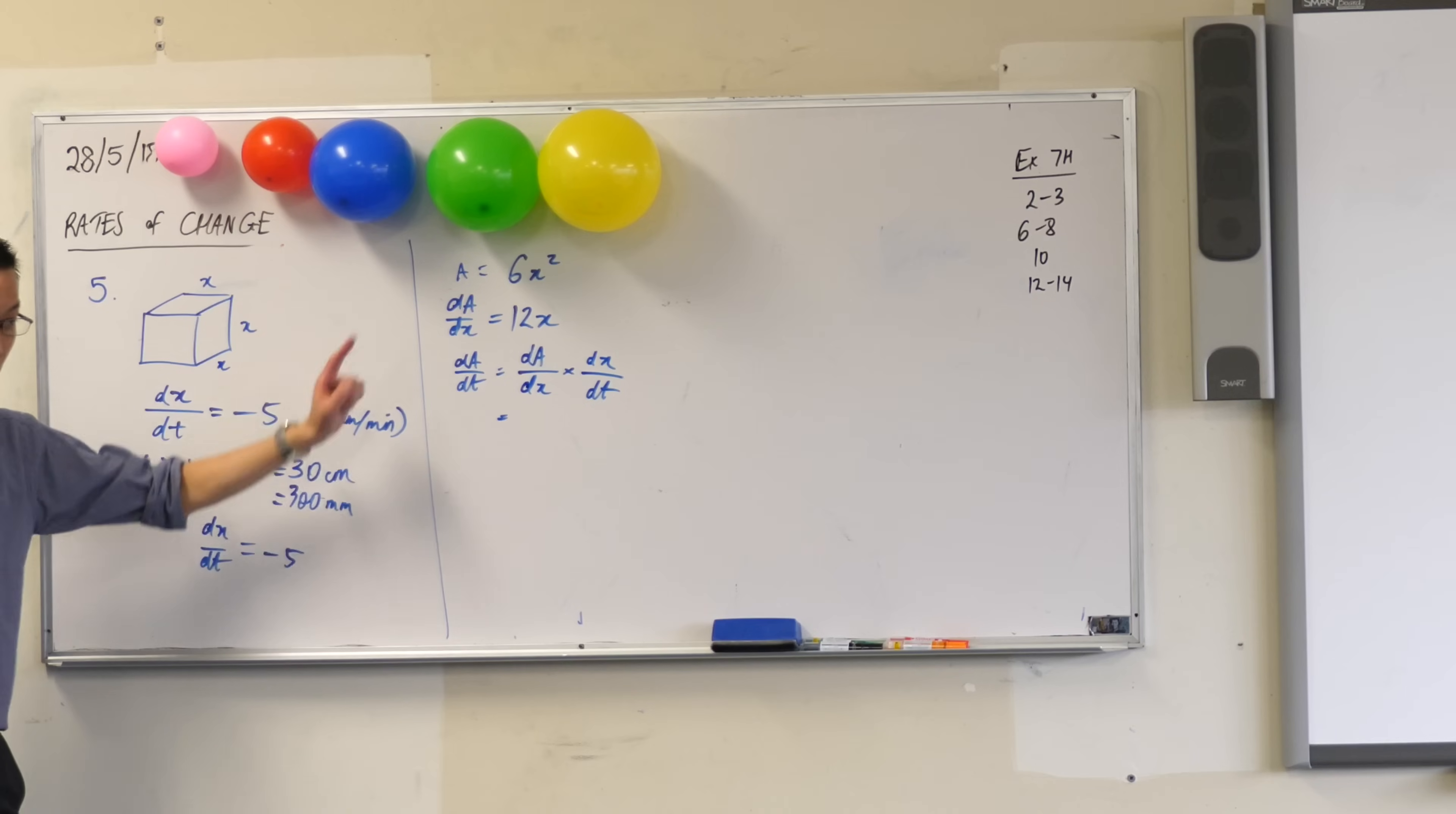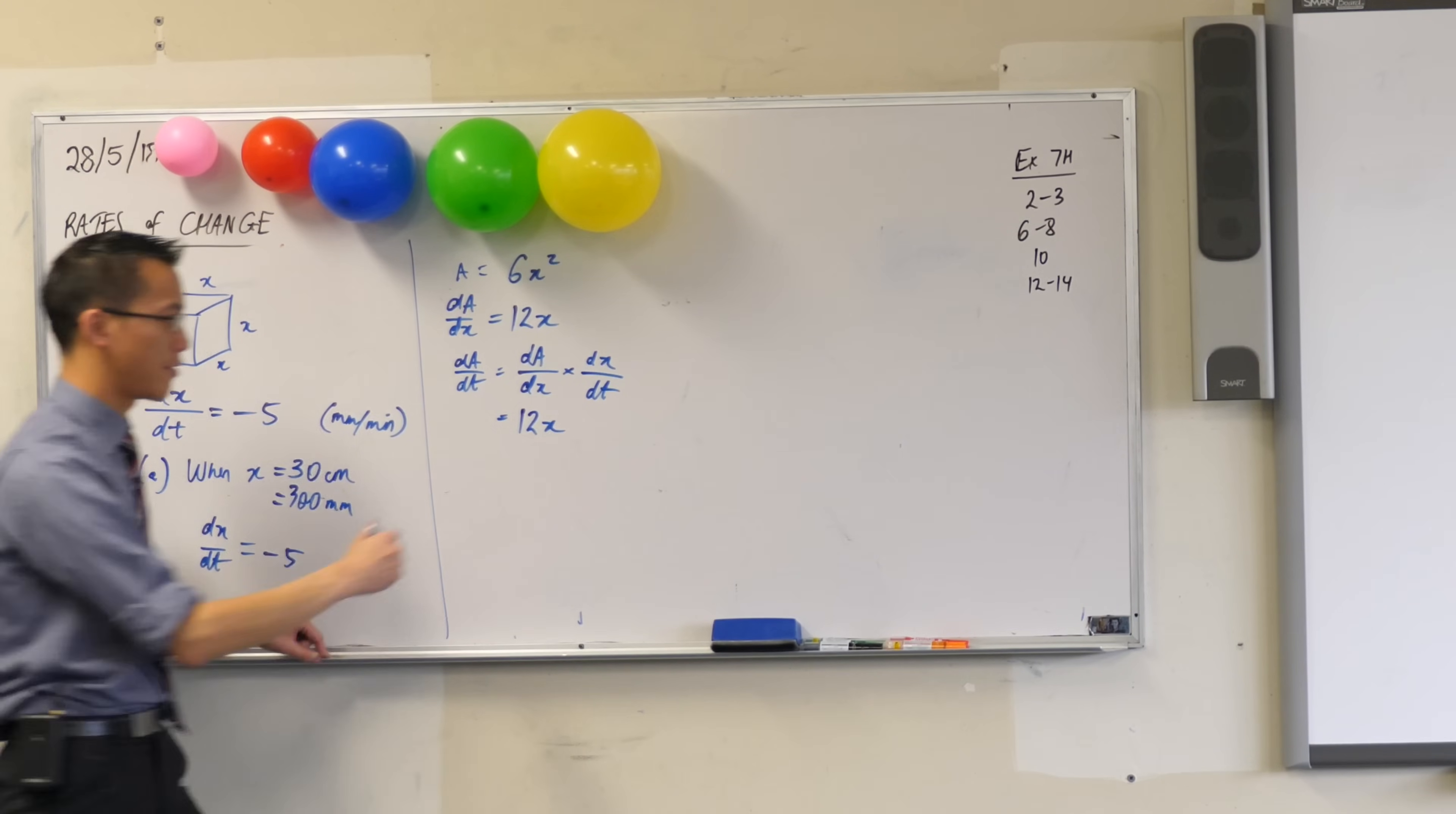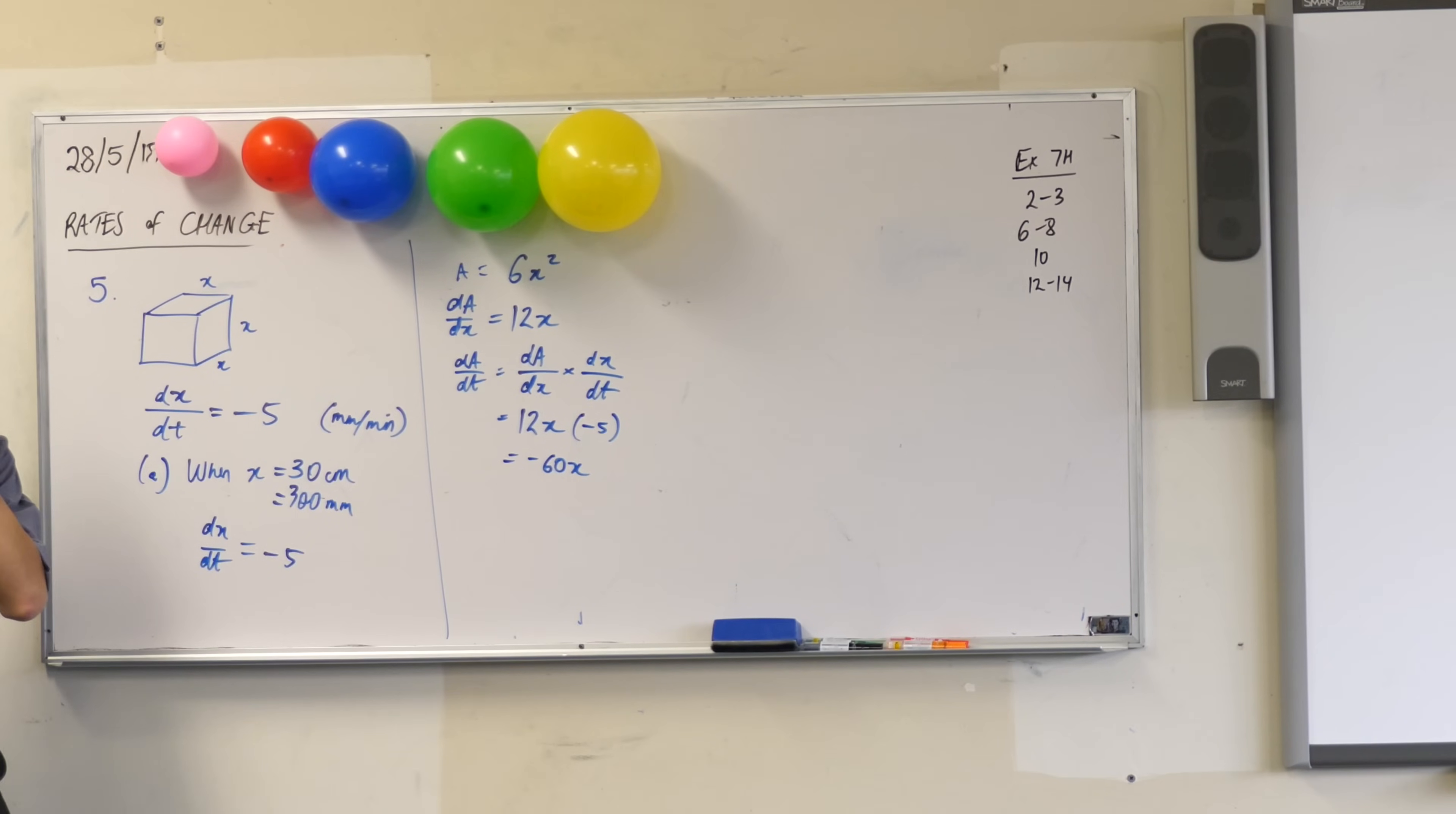I already know what dA on dX is. I just worked it out. It's 12X. And I also know what dX on dT is because by definition, according to the question, it's... Yeah, negative 5. Like so, okay? So it's negative 60X. Are you happy with that? Does that make sense?